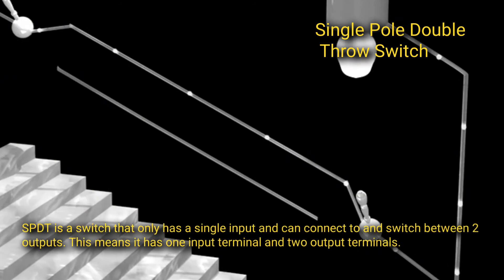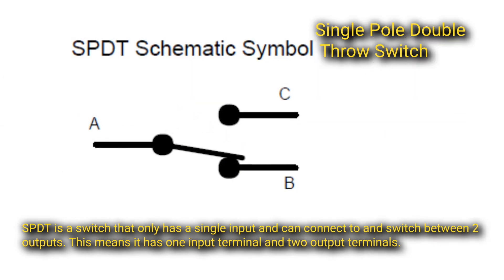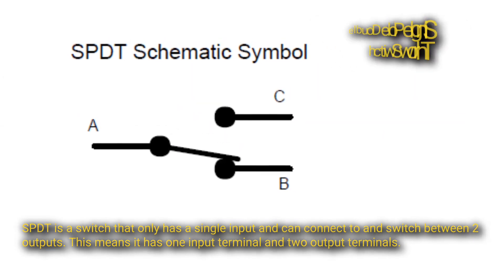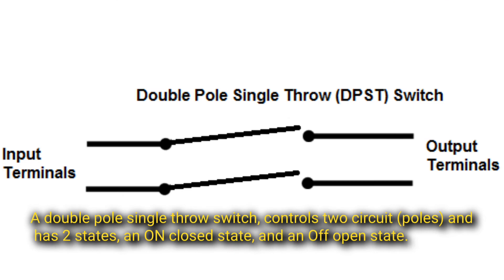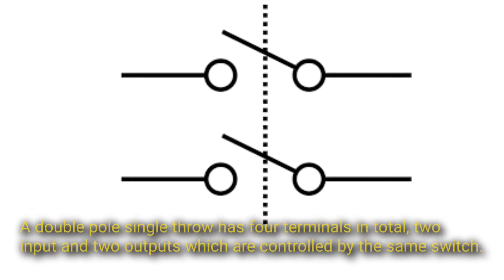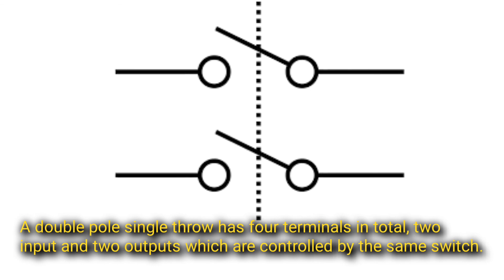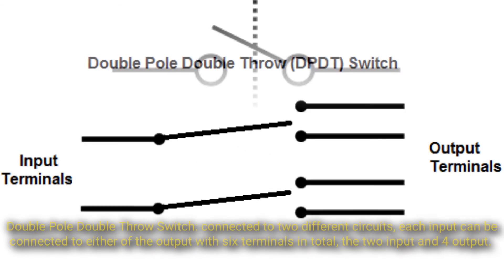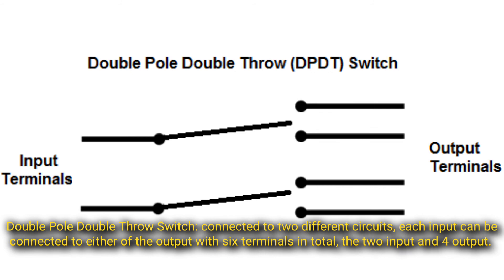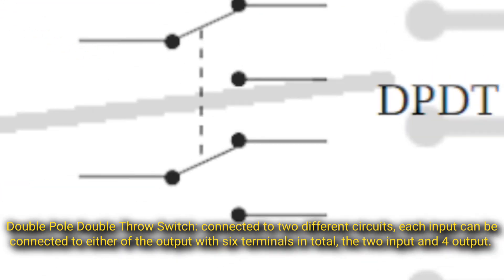Single Pole Double Throw (SPDT) switch has a single input and can connect to and switch between two outputs, giving it one input terminal and two output terminals. Double Pole Single Throw (DPST) switch controls two circuit poles and has two states — an on/closed state and an off/open state — with four terminals in total: two inputs and two outputs, controlled by the same switch.